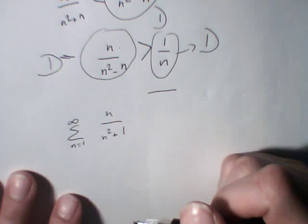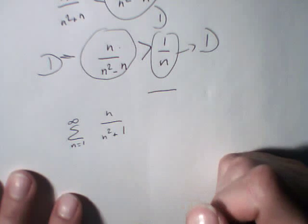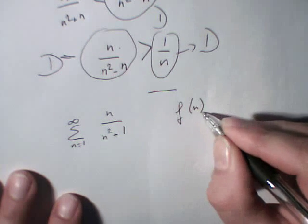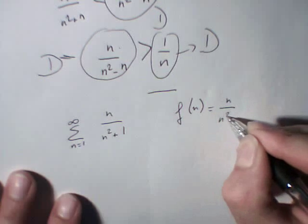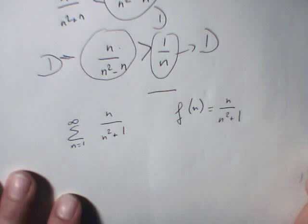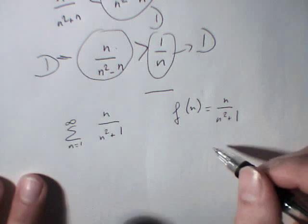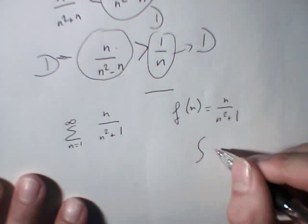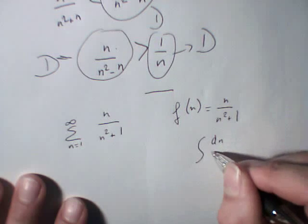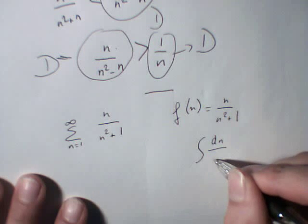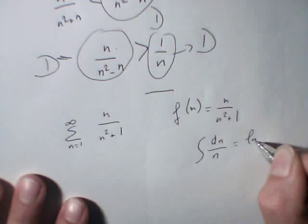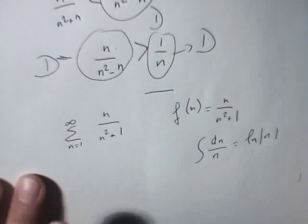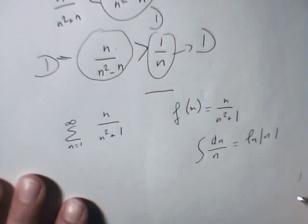The only way I can think of finding the answer to the question is by integrating the function f of n equals n divided by n squared plus 1. And we know that if you integrate dn by n, you have ln of n, ln of absolute value of n.